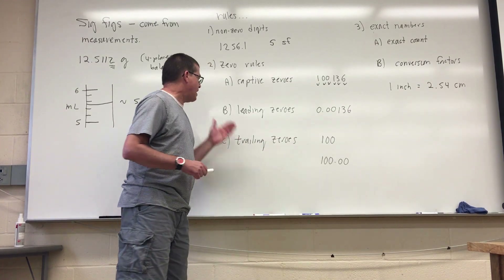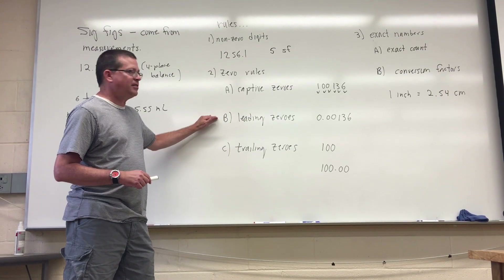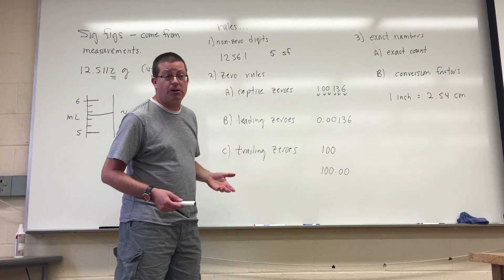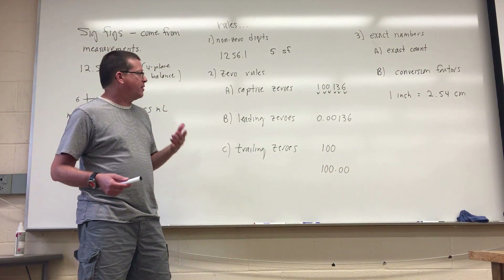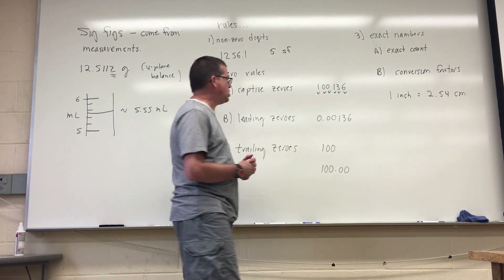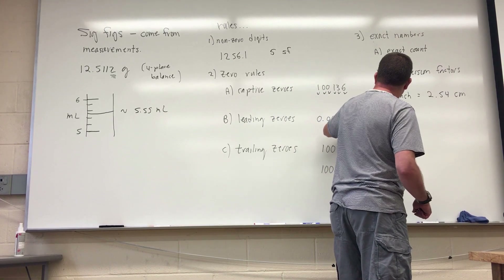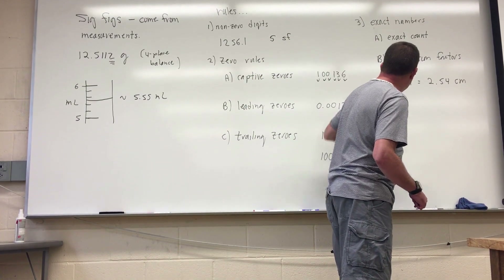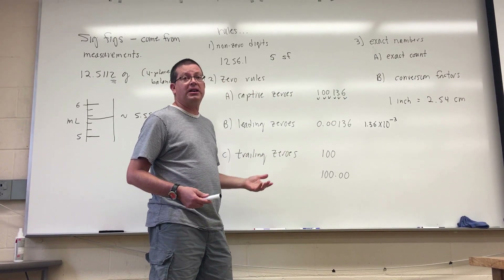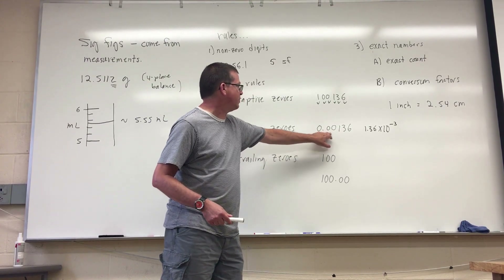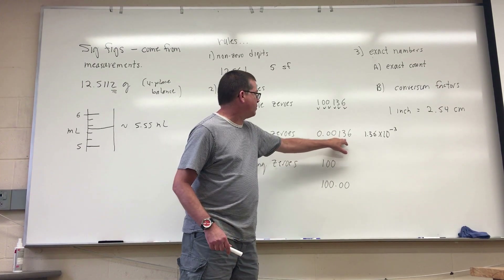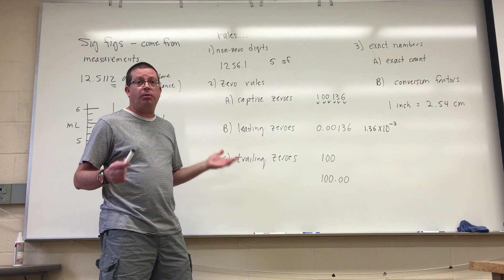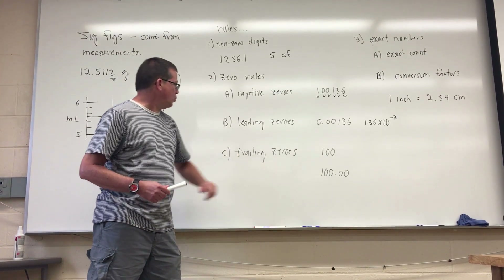The next zero rule concerns leading zeros — zeros that are out in front of a number. Leading zeros are considered to be placeholders and therefore insignificant. Another way to recognize this is that you can rewrite the number in scientific notation, for example as 1.36 × 10⁻³. Written either way, you have three significant digits. So leading zeros are always insignificant because they are placeholders.